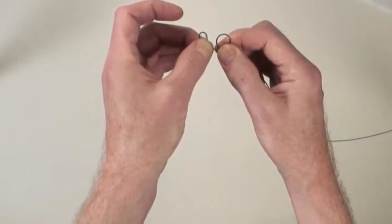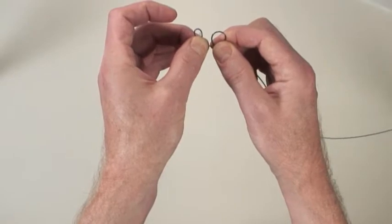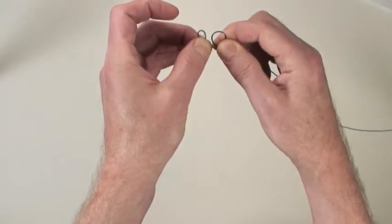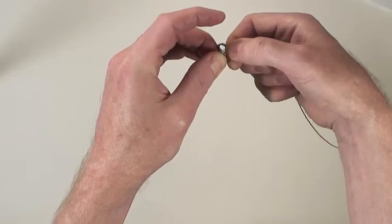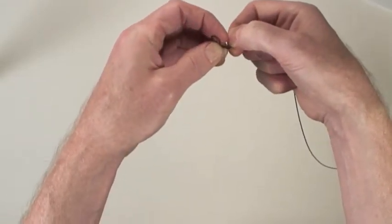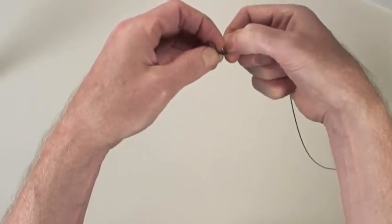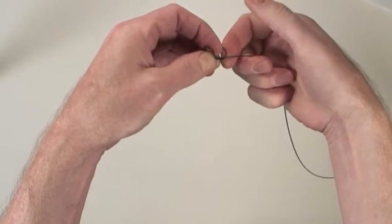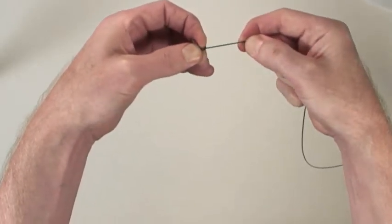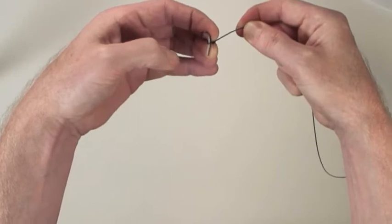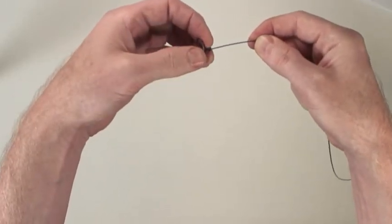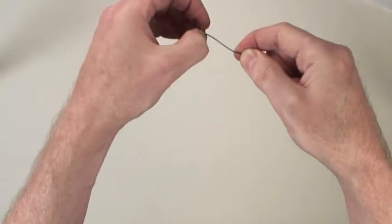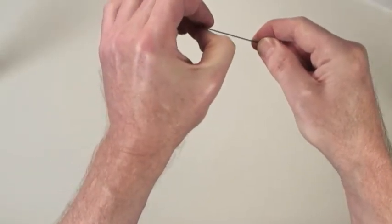Now holding one loop in each hand, I'm going to hook the second loop, the one in my right hand, over the loop in my left hand and over the spline as well, both the loop and the spline. Now I'm going to pull the string end in my right hand tight, and I can use the thumb of my left hand to hook over the knot and give it a little extra tug.